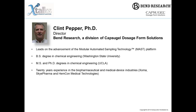Clint is one of the leads on the advancement of the modular automated sampling technology, the MAST platform, which enables optimized sampling of media, cell, and product information across numerous scales in bioreactors with hands-off contamination-free sampling, automated sampling scheduling, and automated at-line analysis. Clint received his bachelor's degree in chemical engineering from Washington State University and master's and Ph.D. degrees in chemical engineering from UCLA.